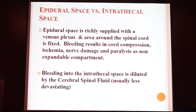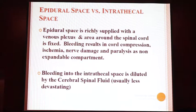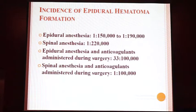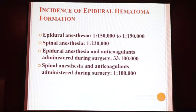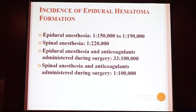The epidural space is a closed area richly supplied with a venous plexus, which is more often the cause of bleeding in the epidural space. Bleeding can result in cord compression, ischemia, nerve damage, and paralysis, being a non-expandable compartment. If bleeding occurs in the intrathecal space, it becomes diluted by CSF and effects are usually less devastating. The incidence of epidural hematoma in routine cases is 1 in 150,000 to 1 in 190,000, whereas in patients on anticoagulants it goes up to 33 in 100,000 for epidurals.